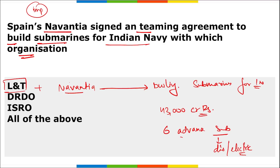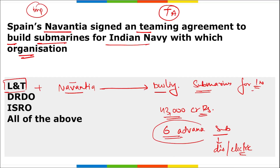To summarize: L&T and Spain's Navantia signed a teaming agreement worth 43,000 crore rupees for building submarines for the Indian Navy — six advanced diesel-electric submarines. Regarding L&T: the CEO and Managing Director is S.N. Subramanyam, headquarters is in Mumbai, Maharashtra, and L&T was established in 1938.